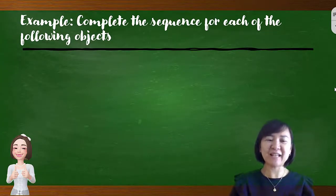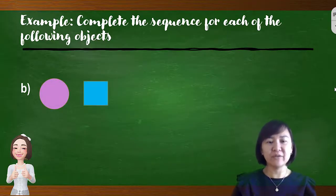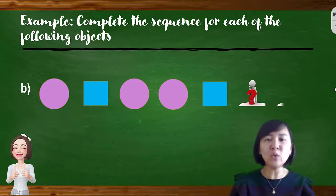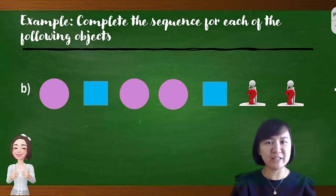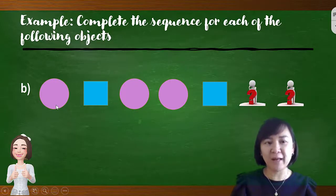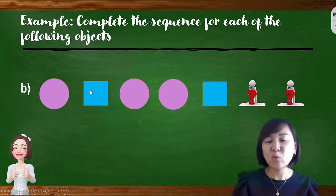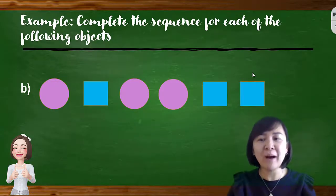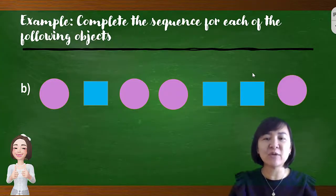Another example with objects: a circle, square, circle, another circle, then a square, followed by two missing objects. Observing the pattern: one circle, one square, then two circles. Therefore, the next two objects should be two squares. Then continuing, the next group would be three circles, followed by three squares. By identifying the pattern of the objects, you can find the missing objects.